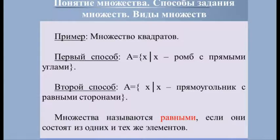Множества называются равными, если они состоят из одних и тех же элементов. Например, {a, b, c, d} = {b, c, a, d}. Элементы этих множеств записаны в различных последовательностях, но наборы элементов совпадают, поэтому множества равны — порядок записи элементов не имеет значения.